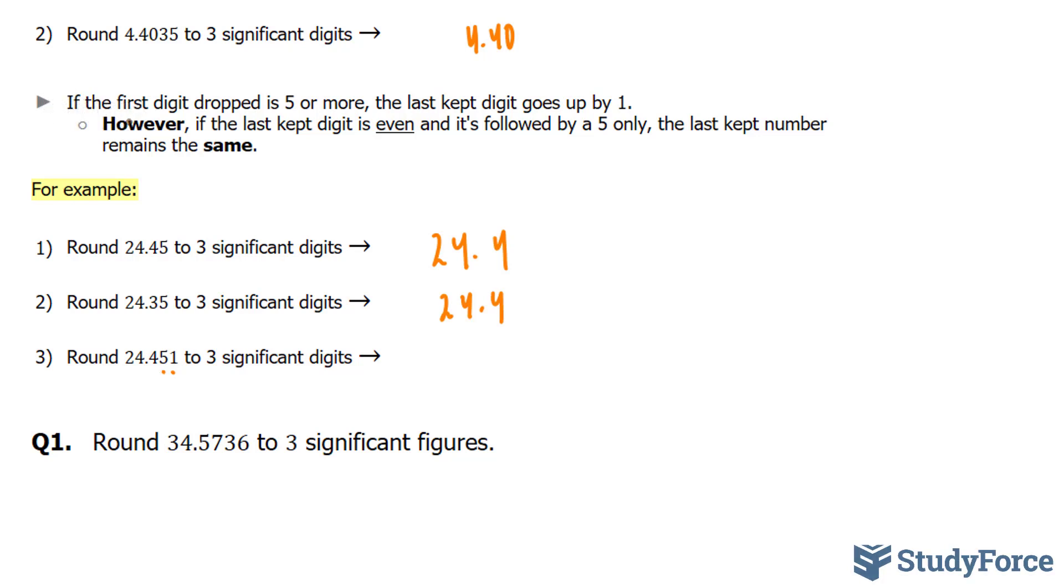The rule says that if the first digit dropped is 5 or more, you go up by 1. So you end up with 24.5. This goes up. Let's do some questions.